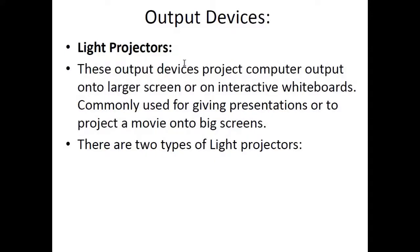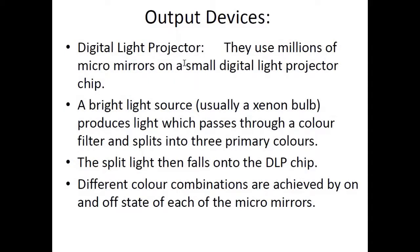The next output devices are light projectors, which project computer output onto a large screen or an interactive whiteboard. They are commonly used for presentations or projecting movies onto big screens. There are two types: digital light projectors (DLP) and LCD light projectors. DLP projectors use millions of micro-mirrors aligned on a small DLP chip. A bright light source, usually a xenon lamp, produces light which passes through a color filter and splits into three primary colors. The split light falls onto the DLP chip, and different color combinations are achieved by the on and off state of each micro-mirror.